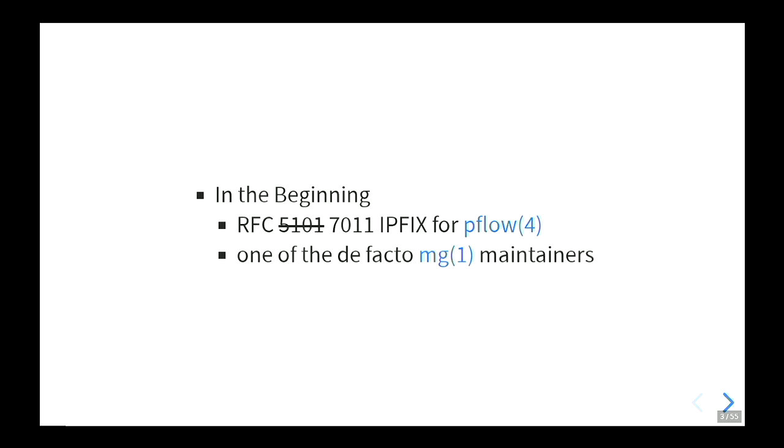In the beginning, I got a commit account for implementing NetFlow version 10, or IPFIX in PFlow, which is OpenBSD's NetFlow exporter. This allows it to export IPv6 flows. And I was one of the de facto MG maintainers, which is a tiny Emacs clone that we have in base.